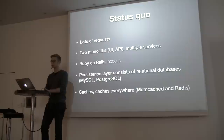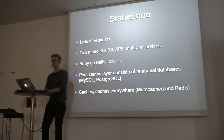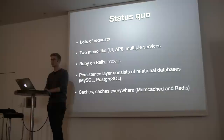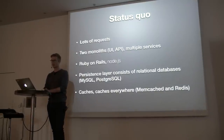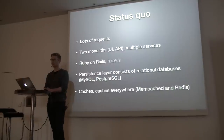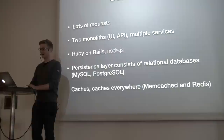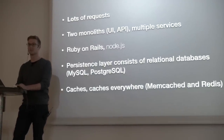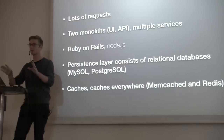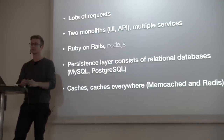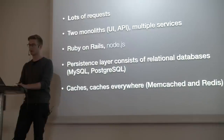Status quo — how did we used to do things at Bleacher Report? There are lots of requests; we're dealing with five-digit amounts of requests per second. The way we traditionally solved that was with two monolithic apps — we had one monolith, then started an API project that became another monolith. We recently started introducing multiple services, breaking more and more out into microservices, and the product I'm going to show today is one of those services.